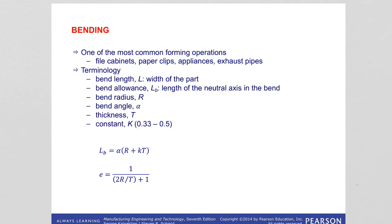Now let's take a look at bending — one of the most common forming operations. Examples of this technique are found in automobile bodies, exhaust pipes, appliances, paper clips, and file cabinets.